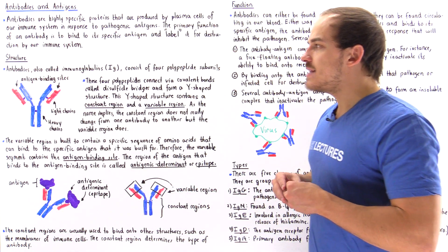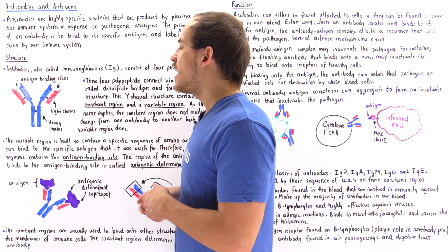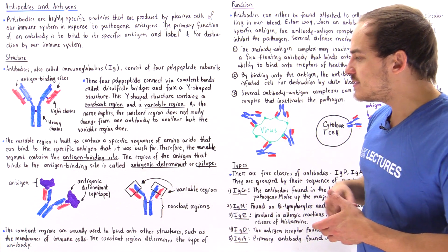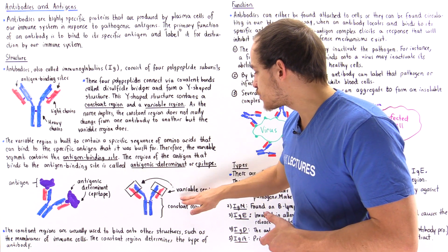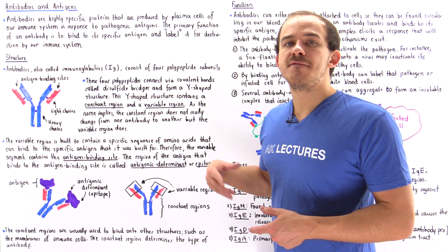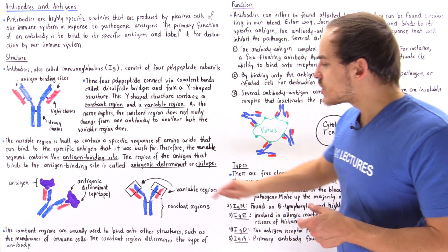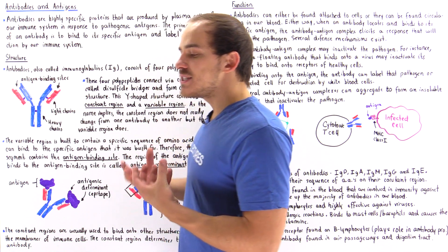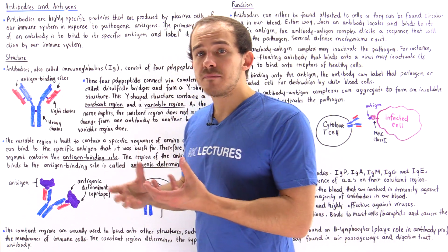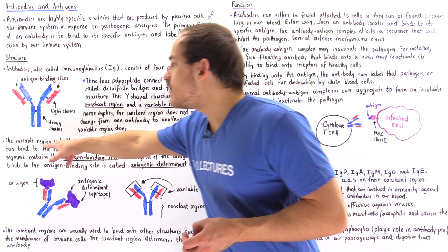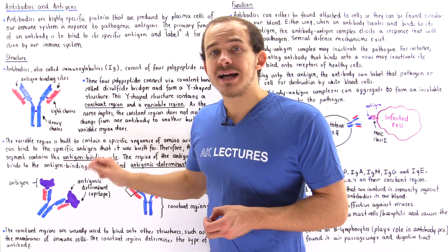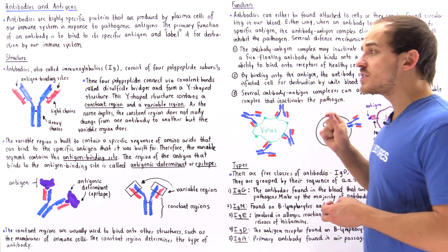On every single antibody, we have a region known as the constant region and a region known as the variable region. Looking at the diagram of the antibody, the boxed-in regions are the variable regions and the rest is the constant region. The variable regions contain specific sequences of amino acids that can bind to that antigen — proteins are sequences of amino acids, and the variable regions are built to contain a specific sequence that can bind to the specific antigen for which the antibody was built.